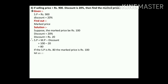Now we assume the actual MP is rupees x. Using the proportion: 80 upon 100 equals 900 upon x. By cross multiplication: x into 80 equals 100 into 900.